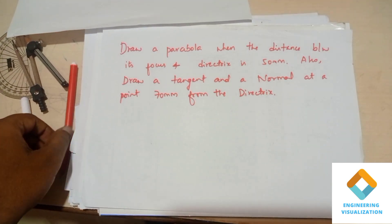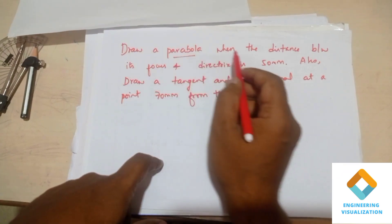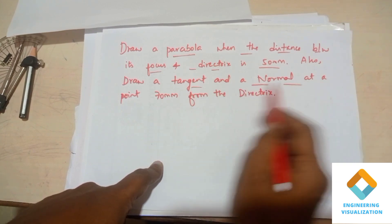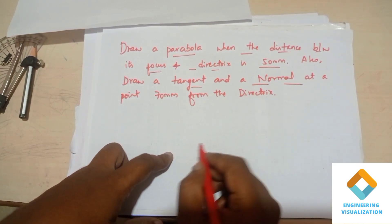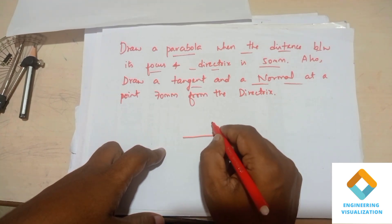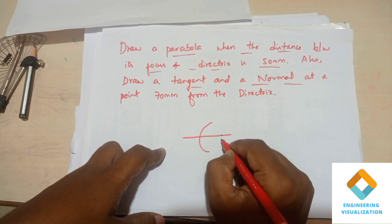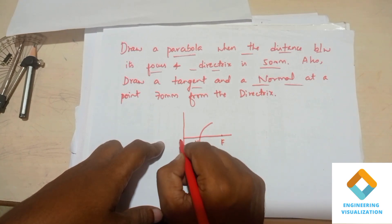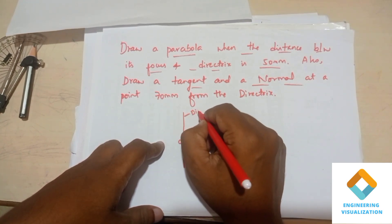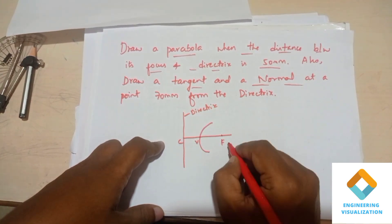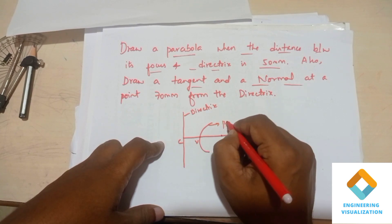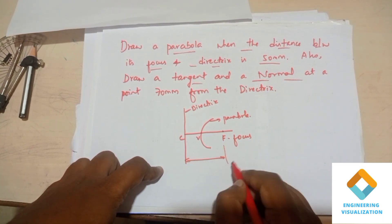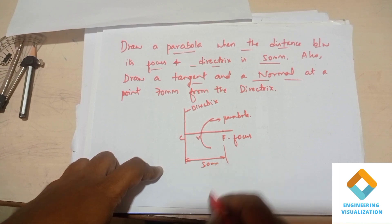Now a problem on parabola: draw a parabola when the distance between its focus and directrix is 50 mm, and also draw a tangent and normal at a point 70 mm from the directrix. The axis is drawn with focal point F, vertex V, and perpendicular to the axis we draw the directrix.